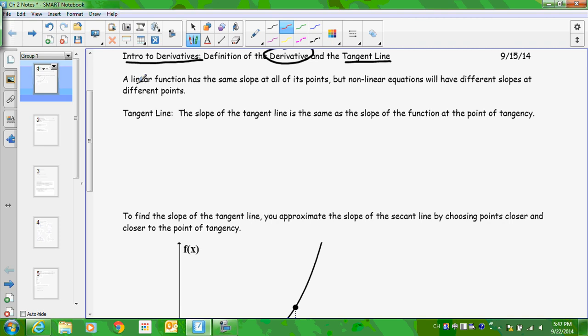Okay, so if you think about a line, it has the same slope all the way through that line. But when you get to something like a parabola, the slope is constantly changing.